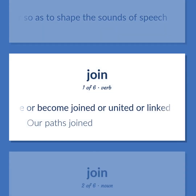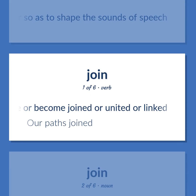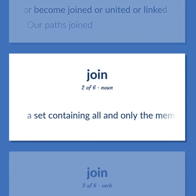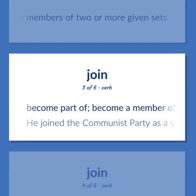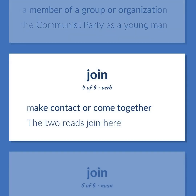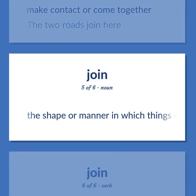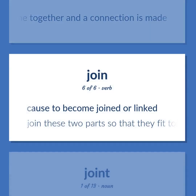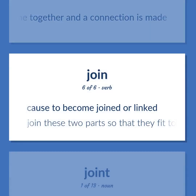Joint (verb): Be or become joined or united or linked. Are paths joined? A set containing all and only the members of two or more given sets. Become part of, become a member of a group or organization — he joined the Communist Party as a young man. Make contact or come together — the two roads join here. The shape or manner in which things come together and a connection is made. Cause to become joined or linked — join these two parts so that they fit together.